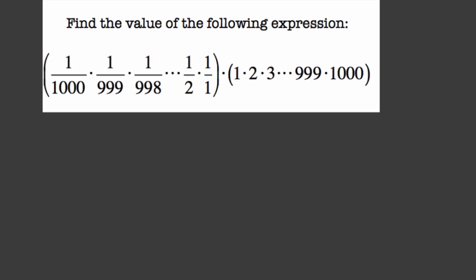So here, this is a good example because, first of all, we have the set of parentheses here. And what it's saying is you have 1 over 1,000, then times 1 over 999, then times 1 over 998.